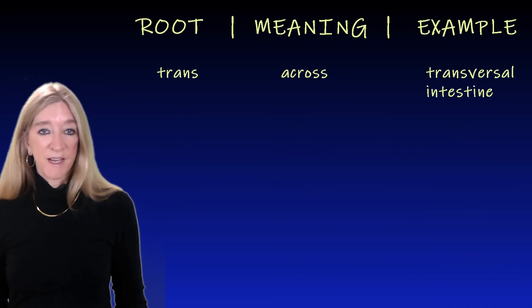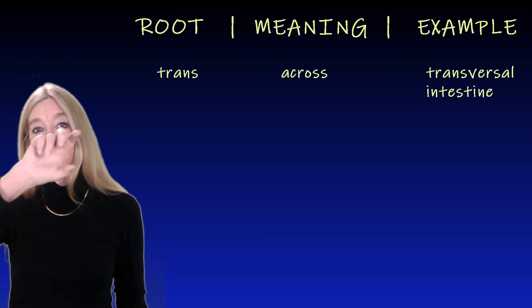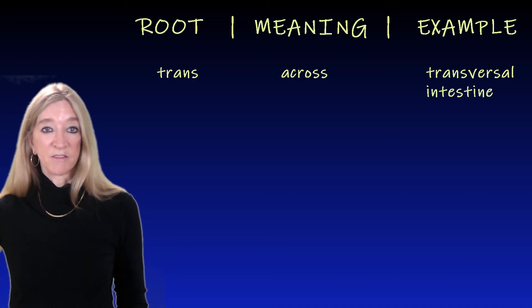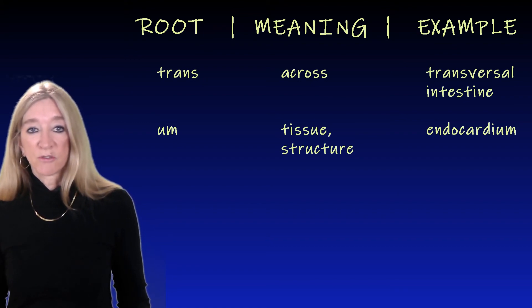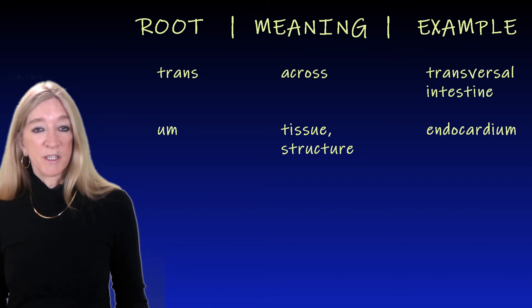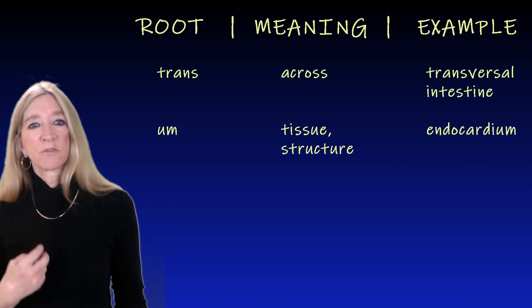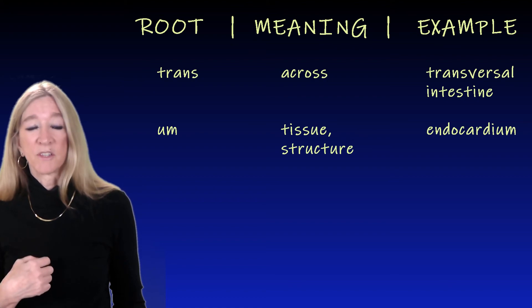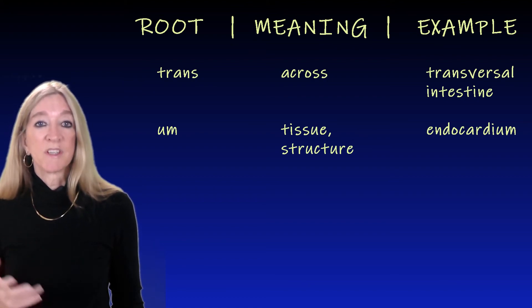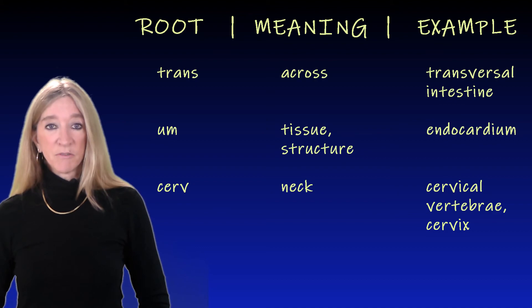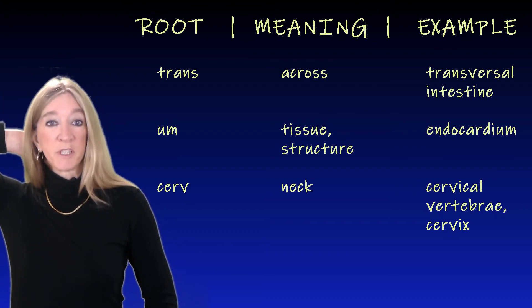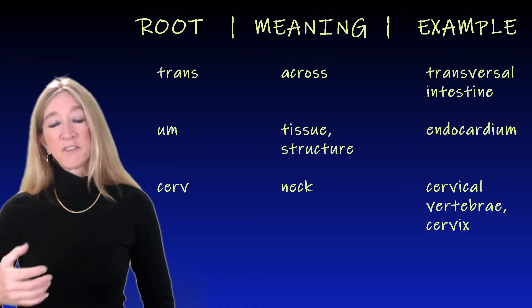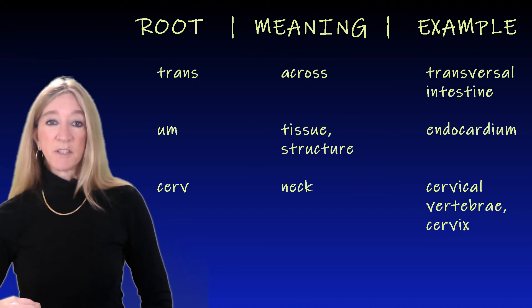The next root, 'trans,' meaning across, as in the transverse intestine. The next root, '-um,' meaning tissue or structure, as in endocardium — the tissue lining the interior of the heart. That's the same '-um' as in the word stadium. The next root, 'cerv,' meaning neck. An example: your cervical vertebrae are the vertebrae in your neck. And the cervix is the neck-like organ coming down from the uterus.